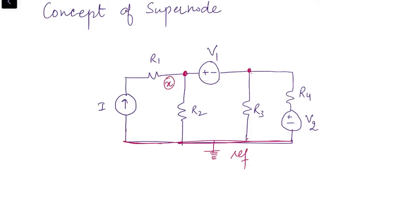Let's say this is node X and this is node Y. With respect to the reference node, we assign voltages to these two nodes — VX to node X and VY to node Y.